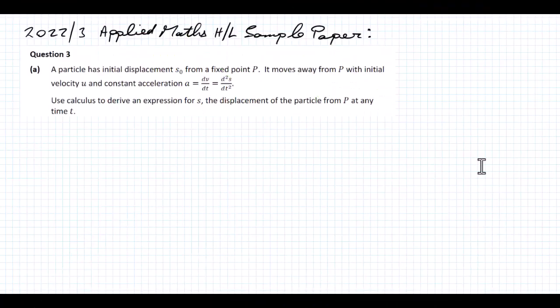In this video I'm going to look at the 2022-2023 applied math sample paper, higher level. In question 3, we have a particle which has initial displacement S₀ from a fixed point P. It moves away from P with initial velocity U and constant acceleration A, which is the rate of change of velocity with respect to time, or d²S/dt². Use calculus to derive an expression for S, the displacement of the particle from P, at any time T.